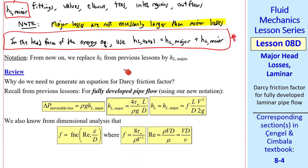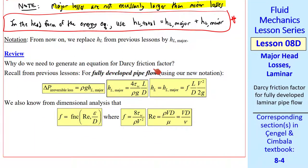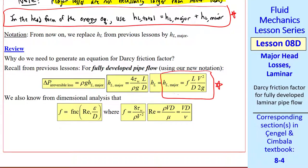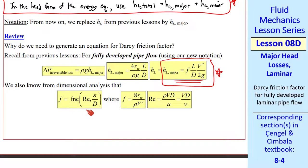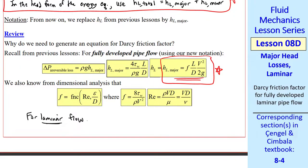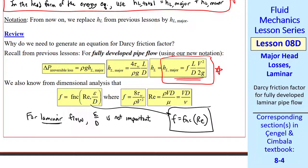Let's deal with major losses first. Quick review: why do we need to generate an equation for Darcy friction factor? Well, as you will recall from previous lessons, for fully developed pipe flow, we have expressions for delta P and HL for the irreversible losses. We also showed from dimensional analysis that F is a function of Reynolds number and epsilon over D. In this lesson we'll deal with laminar flow. For laminar flow, the non-dimensional roughness parameter epsilon over D is not important, so Darcy friction factor F is a function of Reynolds number only.